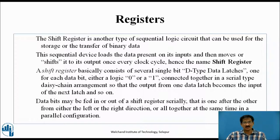The shift register is another type of sequential logic circuit that can be used for the storage or the transfer of binary data. This sequential device loads the data present on its inputs and then moves or shifts it to its output once every clock cycle, hence the name shift register. A shift register basically consists of several single-bit D-type data latches, one for each data bit, either logic 0 or 1, connected together in a serial type daisy chain arrangement, so that the output from one data latch becomes the input of the next latch.